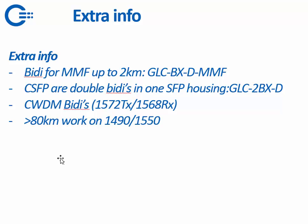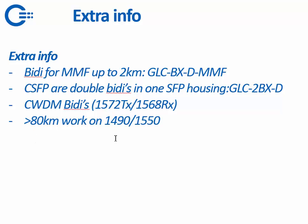Some extra information: we can deliver BDs for multimode fiber up to 2 kilometers — that's the GLC-BXD-MMF. CSFP BDs are a double BD in one housing, so two times 1 Gig in one SFP housing — that's the GLC-2BXD, which we can supply. We can also supply CWDM BDs, which work within one CWDM window, for example 1572 nanometers sending and 1568 receiving. You can find more information and movies on our website. All BDs above 80 kilometers work on 1490 and 1550 nanometers. Thank you very much for watching.